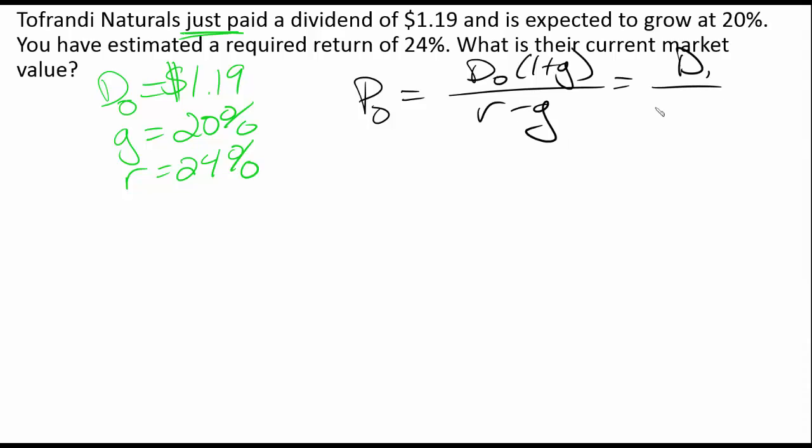Remember, this is equal to the other equation over here, D1 divided by R minus G. It's the same exact thing. The only difference between D0 and D1 is that growth rate.